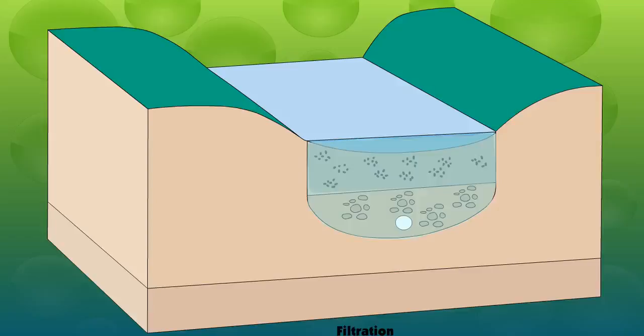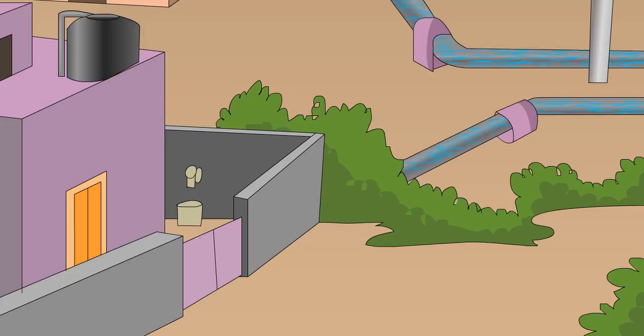After filtration, chlorine gas is passed through the water to kill germs. The chlorinated water is then sent to our taps.